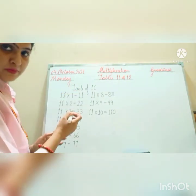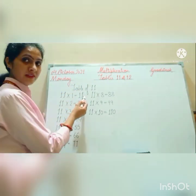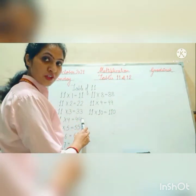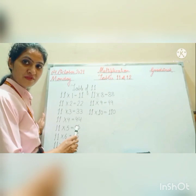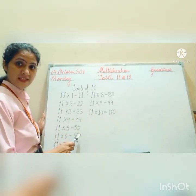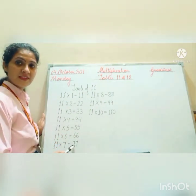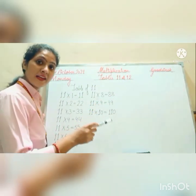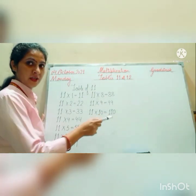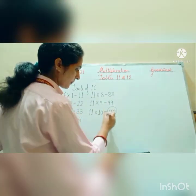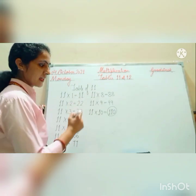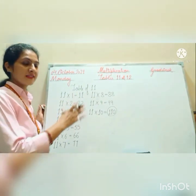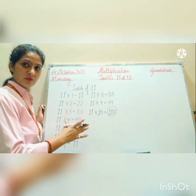Everybody will speak with me. 11 ones are 11, 11 twos are 22, 11 threes are 33, 11 fours are 44, 11 fives are 55, 11 sixes are 66, 11 sevens are 77, 11 eights are 88, 11 nines are 99, and 11 tens are 110. Many students are doing a mistake here — 11 tens are 110. So you have to write this table in your notebook.